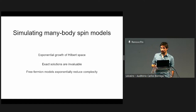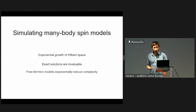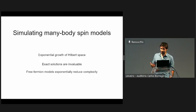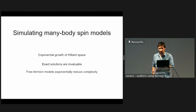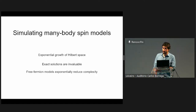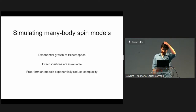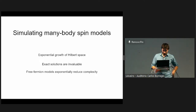The reason free fermion solutions are so powerful is because you reduce the complexity exponentially. Instead of having to diagonalize a 2^n by 2^n matrix, you only have to diagonalize a 2n by 2n matrix, which is by any measure significantly better.